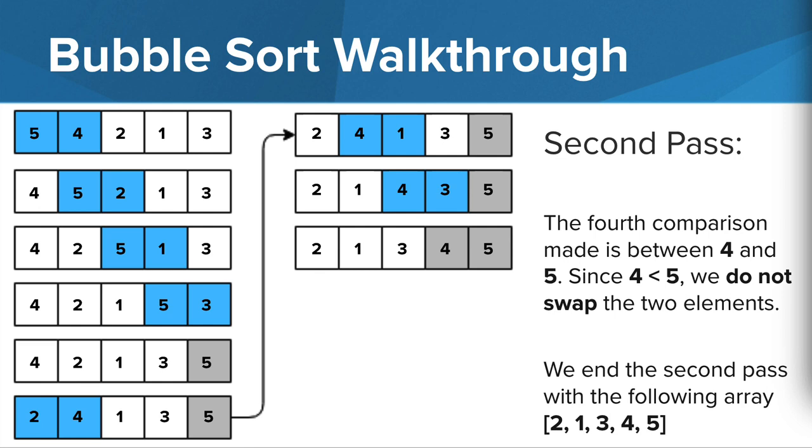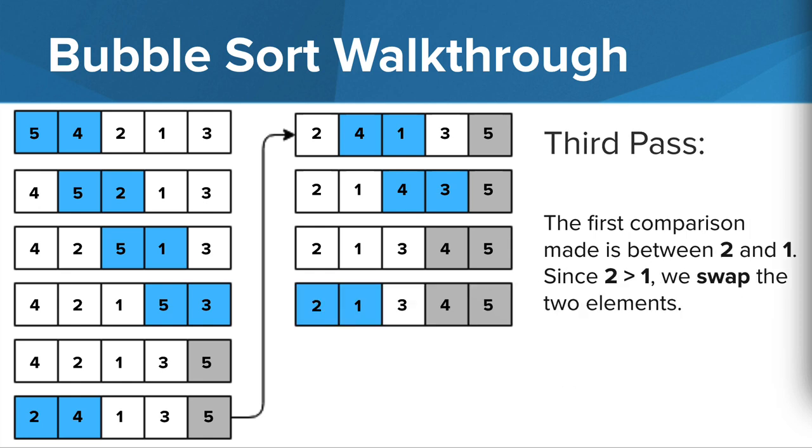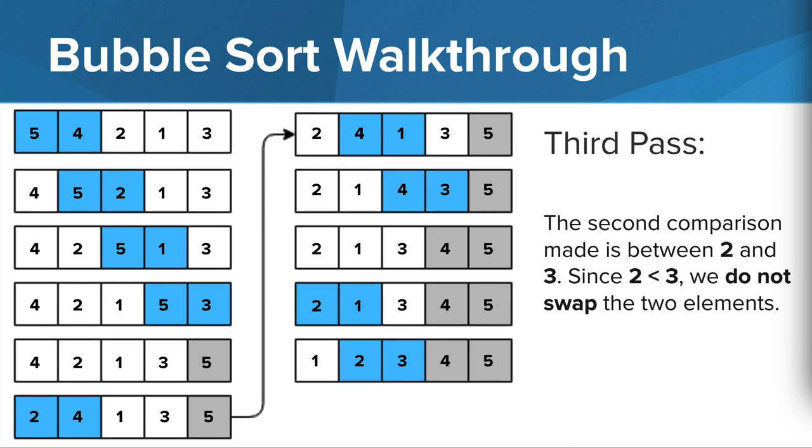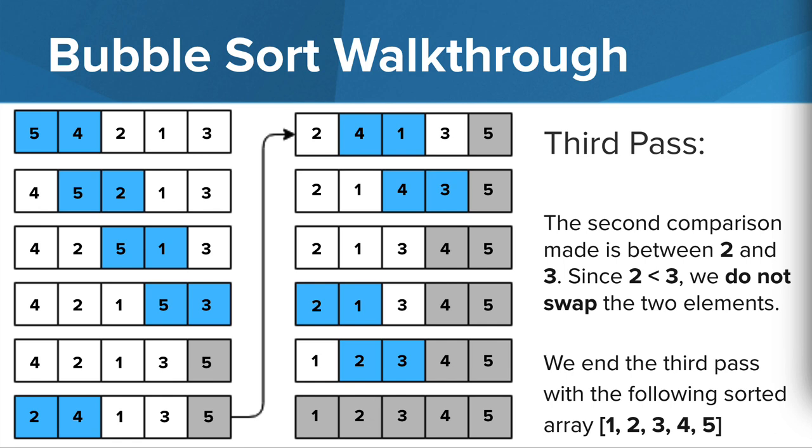Before we move any further, see if you can pause the video here and predict how many more passes we'll need to do in order for our array to be fully sorted. Let's continue. We're now on the third pass of the array, and we compare 2 and 1. Since 2 is greater than 1, we swap. And then we compare 2 and 3 next, and since 2 is less than 3, we do not swap those two elements. And we end the third pass with the array sorted 1, 2, 3, 4, 5.